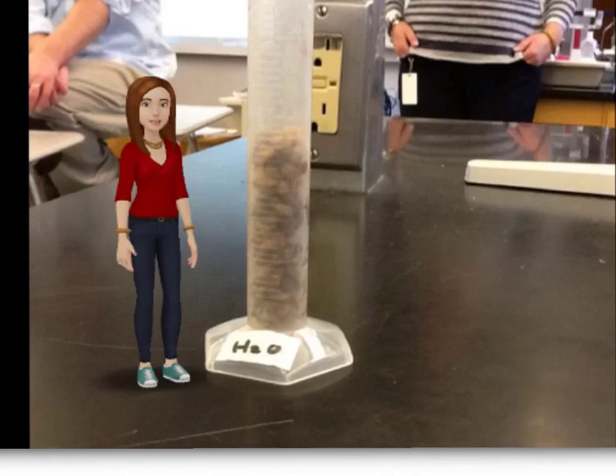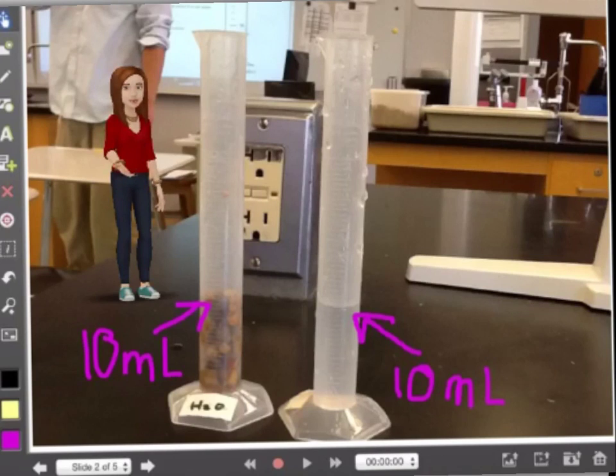How to calculate the volume of air in a sand-air mixture by KT and KT. In these two graduated cylinders, we have 10 milliliters of sand and 10 milliliters of water, and we will combine them.